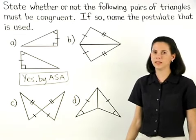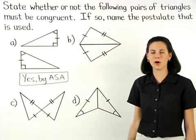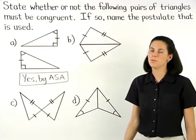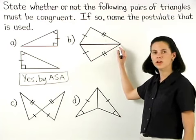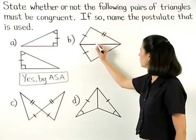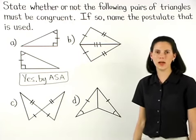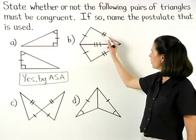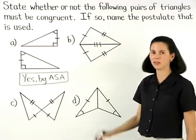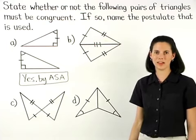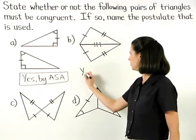In Part B, we only have two pairs of corresponding sides that are marked as congruent, but notice that these triangles share a third side, so we can mark this side as congruent to itself. Since we now have three sides of one triangle congruent to three sides of a second triangle, we can say that these triangles are congruent by side-side-side.